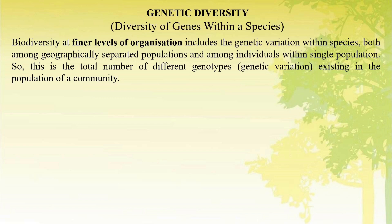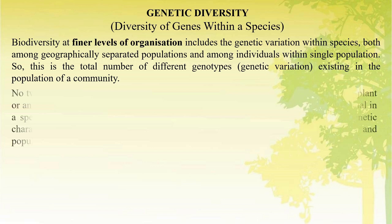Now I will discuss genetic diversity, species diversity, and ecosystem diversity one by one. Biodiversity at finer levels of organization includes the genetic variation within species, both among geographically separated populations and among individuals within a single population. This is the total number of different genotypes existing in the population of a community.